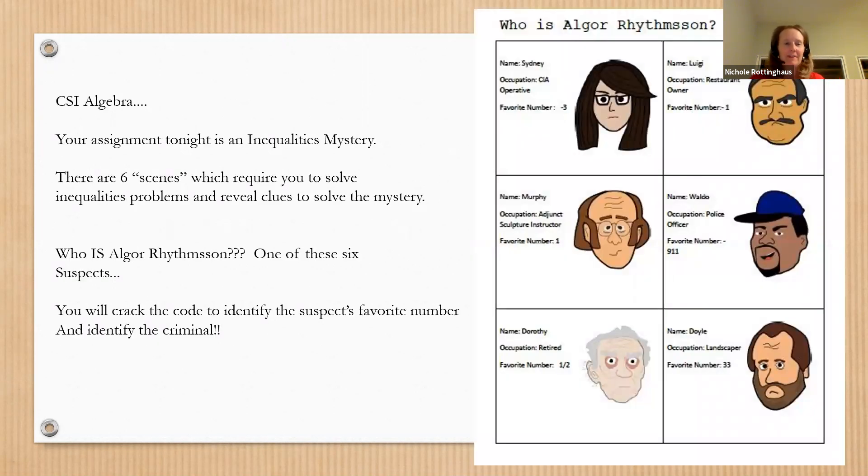So, it's called CSI algebra. I'm going to move me over here because I'm not a suspect. What you're going to read is there's a letter that explains that you are trying to solve a crime.